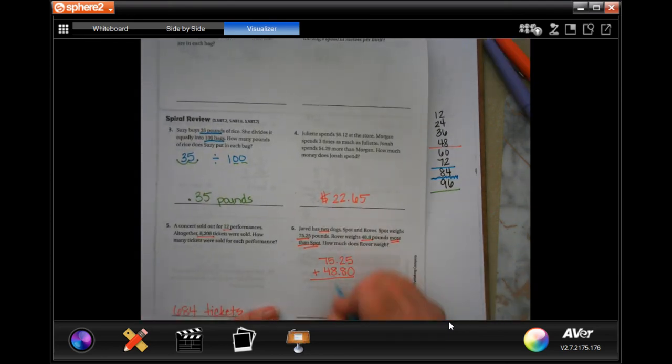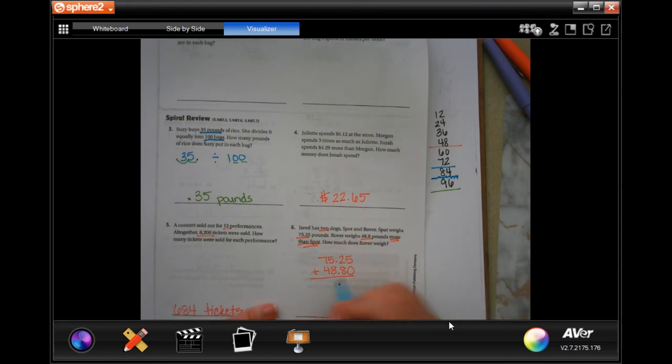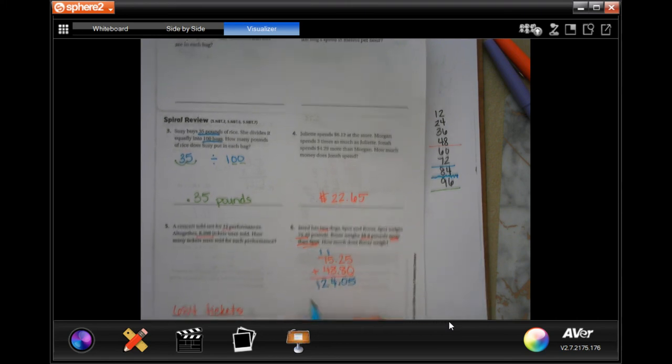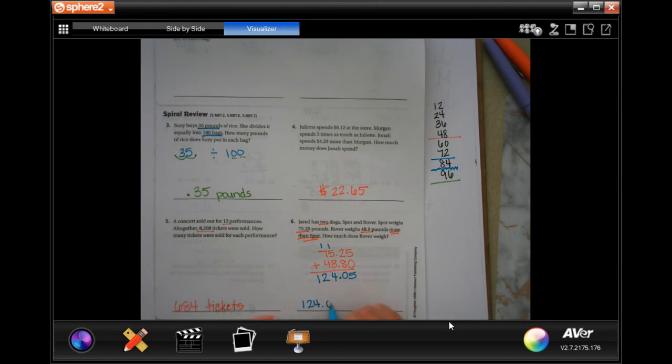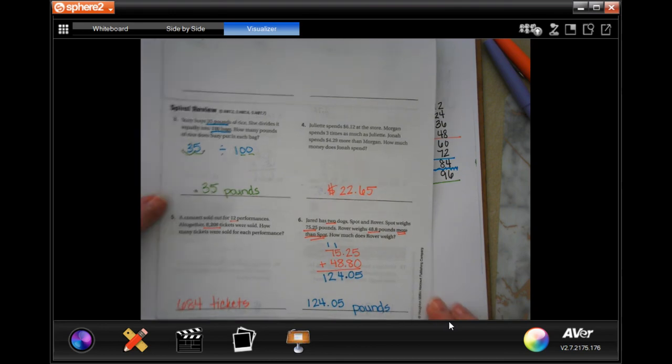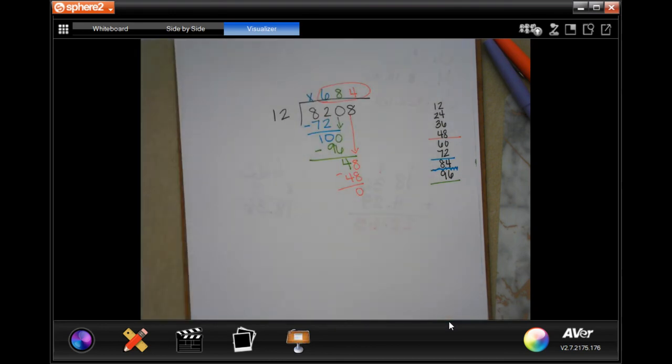Dropping that decimal first because we're adding decimals. 5 plus 0 is 5. 2 plus 8 is 10. Carry the 1. 1 plus 5 is 6. Plus 8 is 14. Carry the 1. 1 plus 7 is 8. Plus 4 is 12. 124.05 pounds. All right, guys. Thanks for hanging out for 5.7. Come on back for 5.8. See you soon.